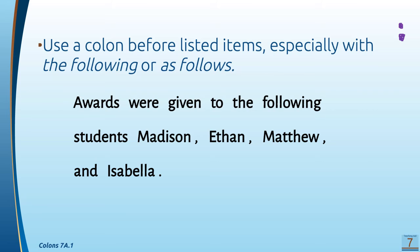For example: 'Awards were given to the following students:' — and now we're going to start a list. To show that we are stopping the sentence and starting our list, we put a colon right there. 'Awards were given to the following students: Madison, Phoebe, Ethan, Matthew, and Isabella.' The clue words that show you need a colon are 'the following' or 'as follows,' because you're ending your sentence and just giving a list.